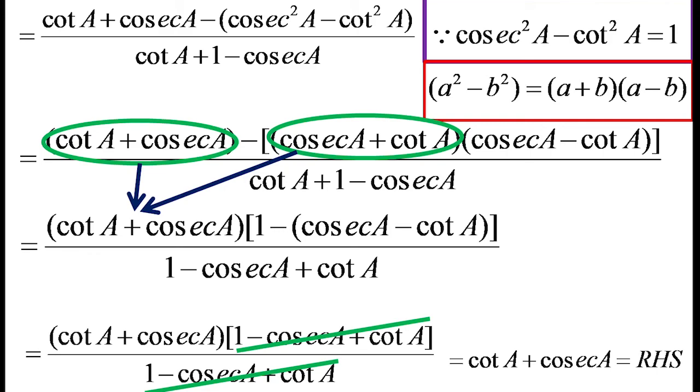Is it clear? It is very important question. Two identities, trigonometric identity cosec square A minus cot square A equal to 1 is applied, and a square minus b square equal to a plus b into a minus b, that identity also applied in this question. So it's very important question. Study it well. Thank you.